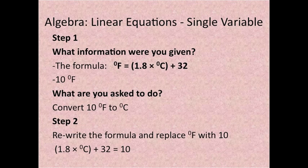Step 2: Rewrite the formula and replace degrees Fahrenheit with 10. So you have 1.8 times degrees centigrade plus 32 equals 10. Notice that all I did was move what was on the left hand side to the right hand side and vice versa.